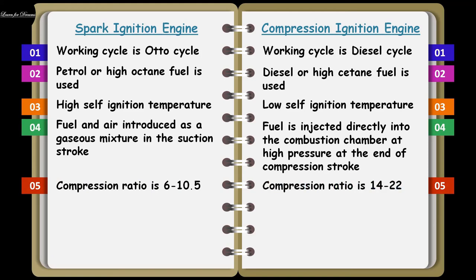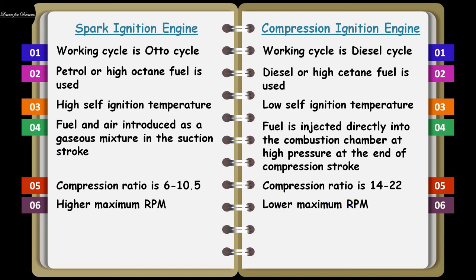Next one is the compression ratio. The compression ratio in case of CI engine is much higher than the spark ignition engine. The value of the compression ratio is 6 to 10.5 in case of SI engine, and for CI engine it is 14 to 20. Next, the RPM — revolutions per minute — the speed with which the engine operates. RPM is more in case of SI engine and RPM is less in case of CI engine.